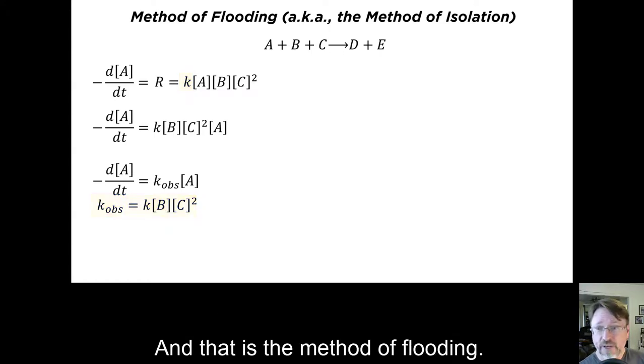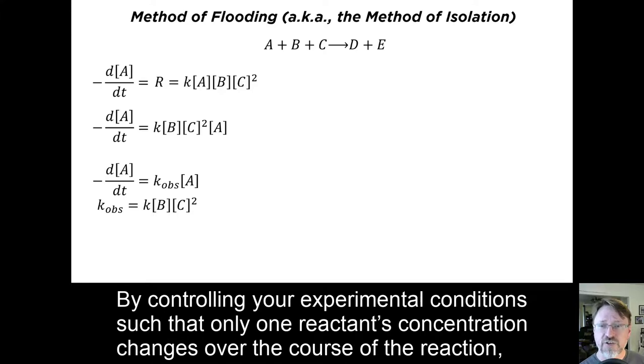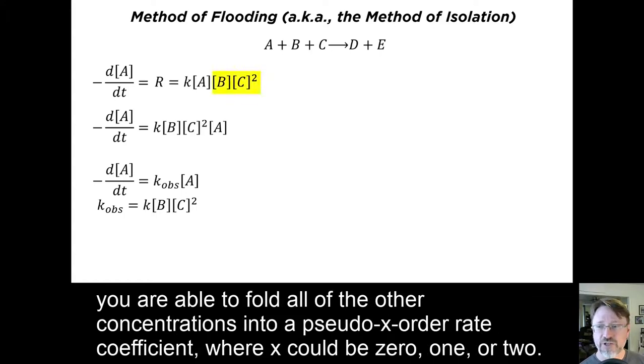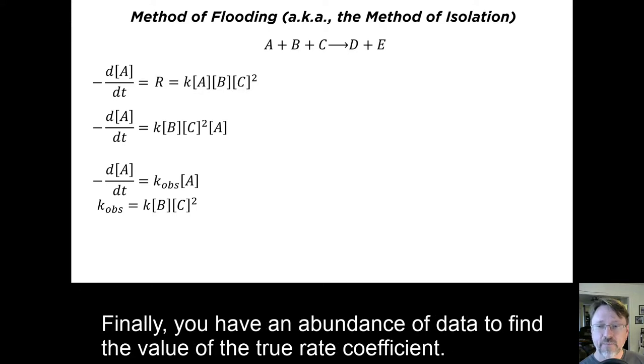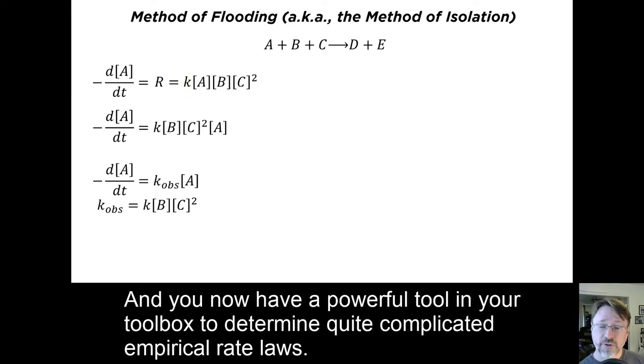And that is the method of flooding. By controlling your experimental conditions such that only one reactant's concentration changes over the course of the reaction, you are able to fold all of the other concentrations into a pseudo-X order rate coefficient, where X could be 0, 1, or 2. You then measure these K observed values while varying the other concentrations one at a time to find the other reaction orders. Finally, you have an abundance of data to find the value of the true rate coefficient. And you now have a powerful tool in your toolbox to determine quite complicated empirical rate laws.